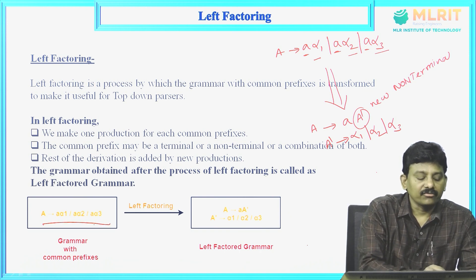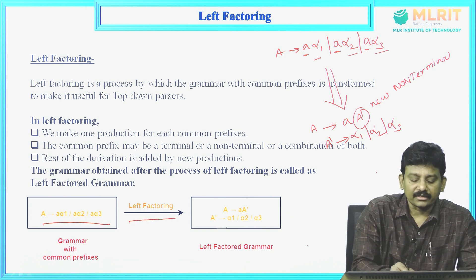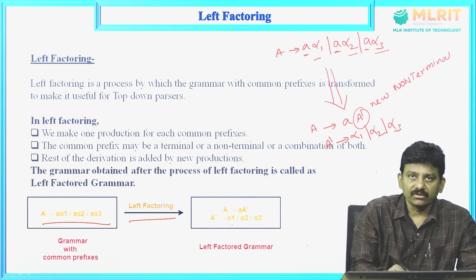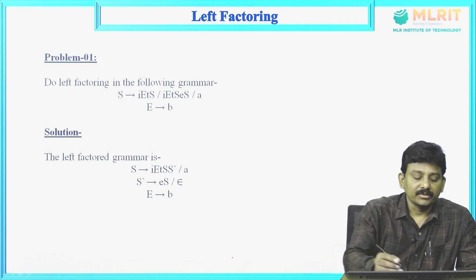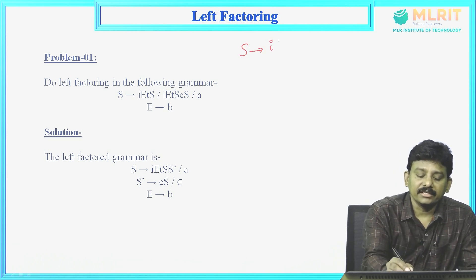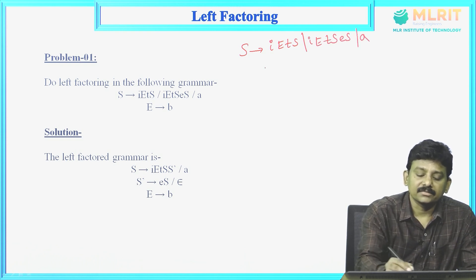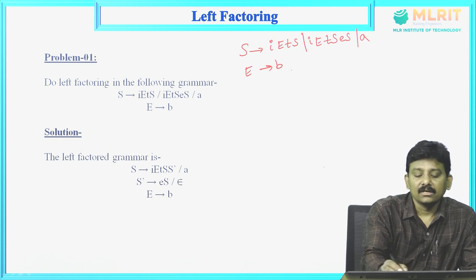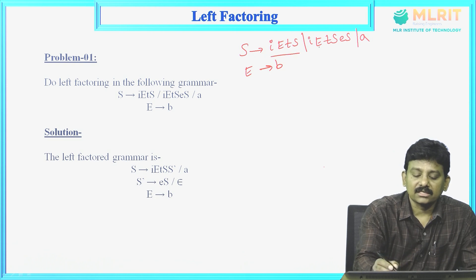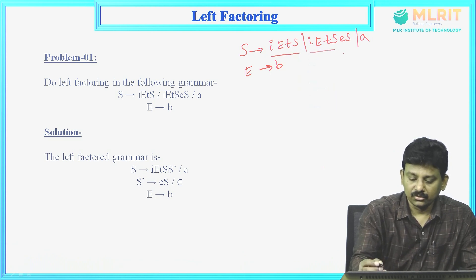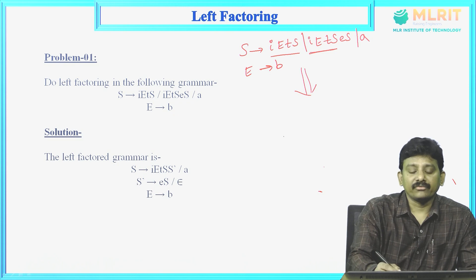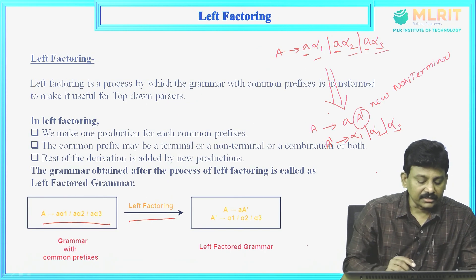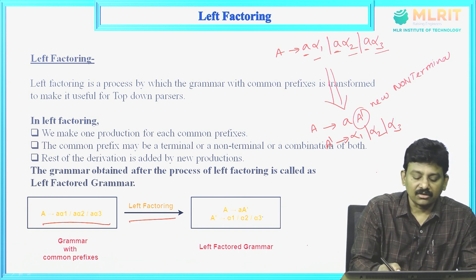So: A derives a-alpha1 | a-alpha2 | a-alpha3. After left factoring, we get A derives a-A', and A' derives alpha1 | alpha2 | alpha3. Now consider this example — do the left factoring for the grammar: S derives iets | ietses | a, and E derives b. In this grammar, S derives iets and S derives ietses — two rules having the common prefix iets.